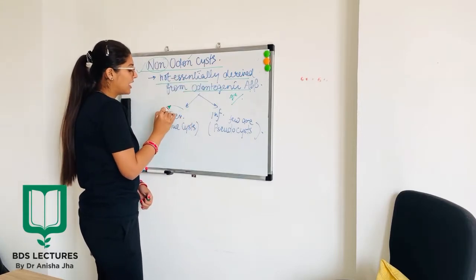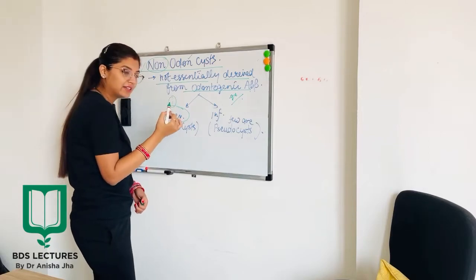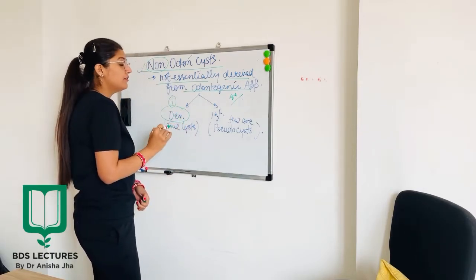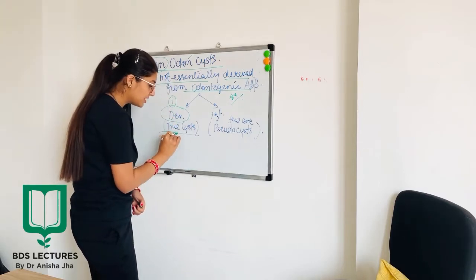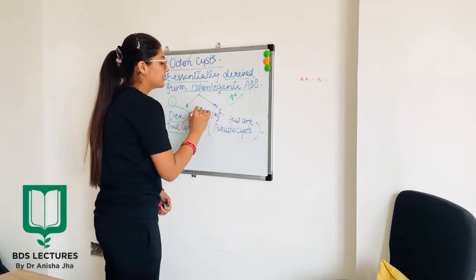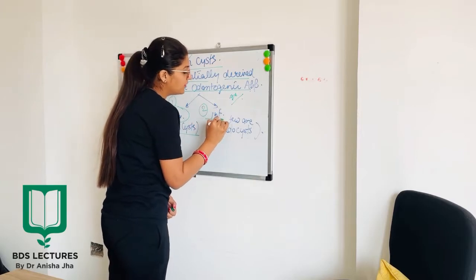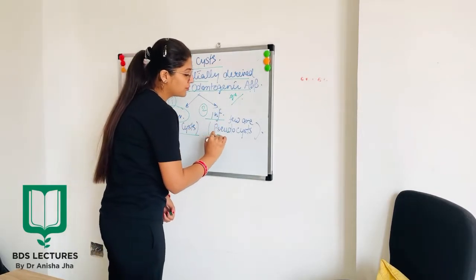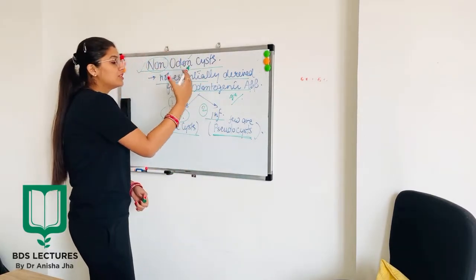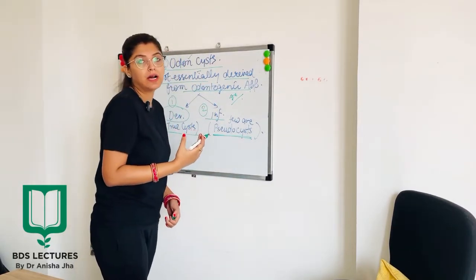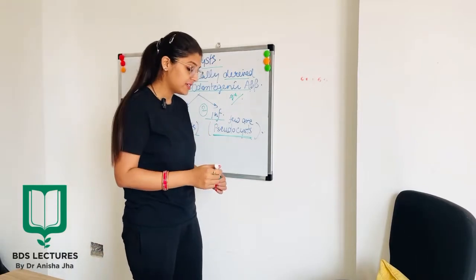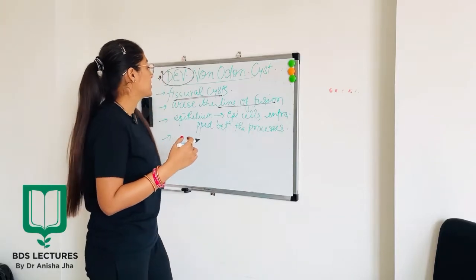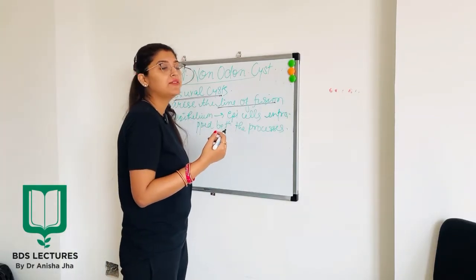When we talk about the types, there are two categories. Firstly, the developmental non-odontogenic cysts, which are mainly true cysts. The second category is the inflammatory non-odontogenic cysts, in which there are a few pseudo cysts also. This was a brief introduction about non-odontogenic cysts.